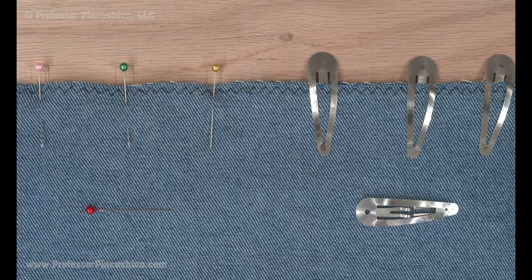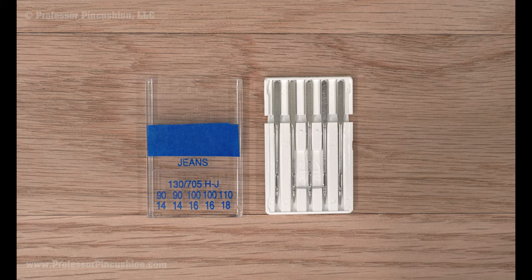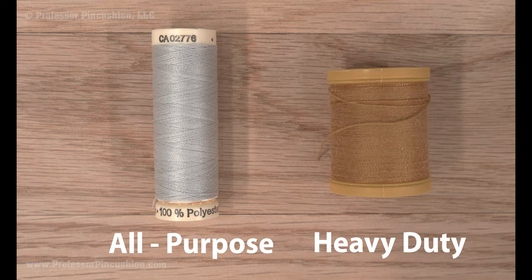When pinning pieces together, you may need to use extra long pins or clips for heavier denim. For sewing needles, use a jeans needle either 90/14 or 100/16. When sewing seams, you can use all-purpose thread. But for topstitching, you can use a heavy-duty or topstitch thread for the upper threading and all-purpose in the bobbin.